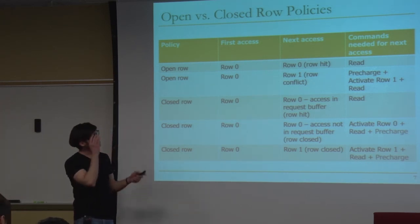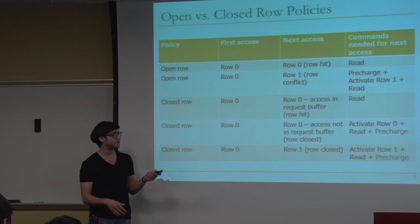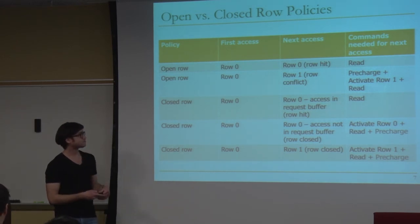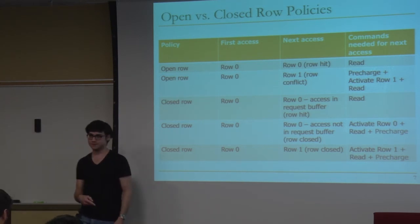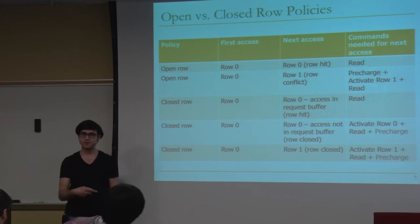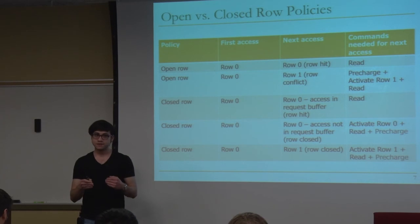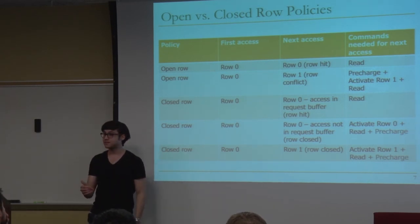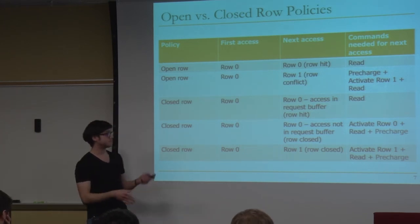Going back to the example: pre-charge row zero back, activate row one bringing its data into the row buffer, then issue the read — that's a row conflict with an open row policy. With a closed row policy, same scenario: access row zero, service it, and as we're accessing row zero another request for row zero queues up in the request buffer. We keep the row open to service that queued request — so this is a row hit with the closed row policy.